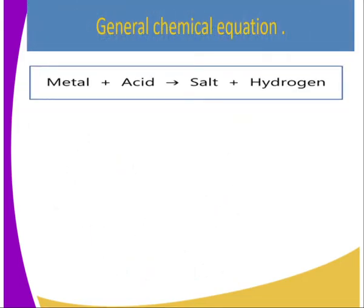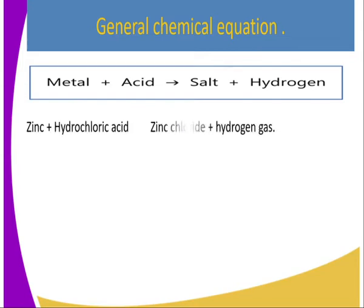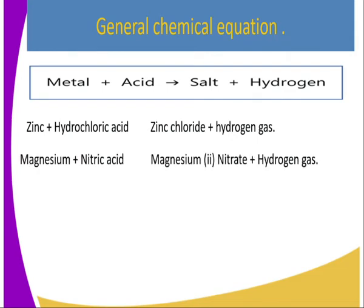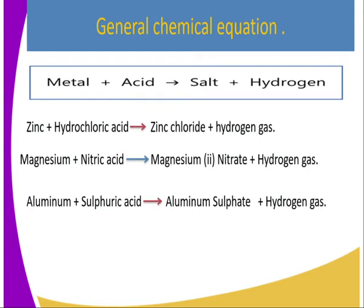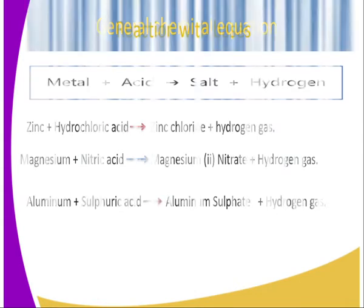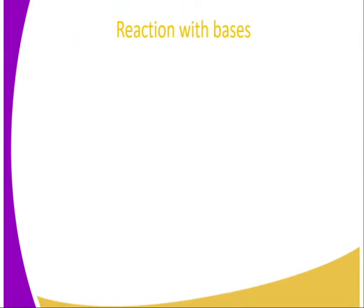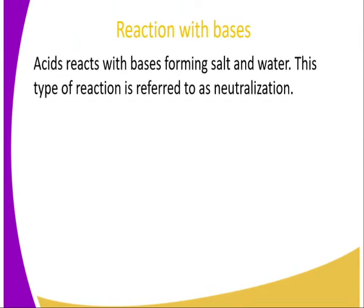The general chemical equation is: a metal reacts with an acid to form salt and hydrogen gas. For instance, zinc reacts with hydrochloric acid to form zinc chloride plus hydrogen gas; magnesium reacts with nitric acid to give magnesium nitrate and hydrogen gas; and aluminium with sulfuric acid gives aluminium sulfate and hydrogen gas.